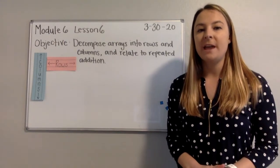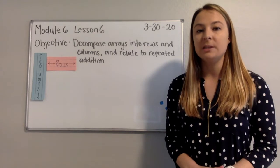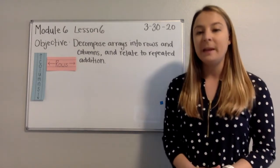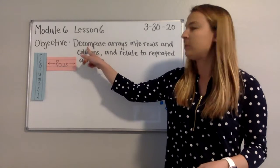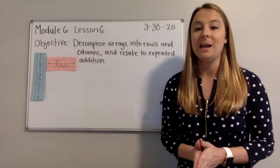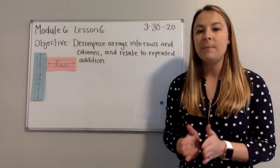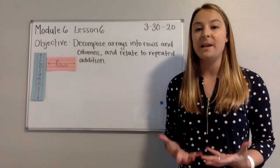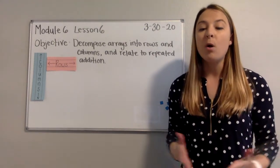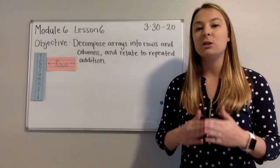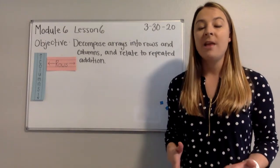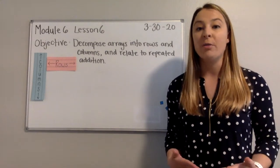Our objective for today is to decompose arrays into rows and columns and relate to repeated addition. I want to talk about this word decompose for just a second. When we decompose something, we're going to take it apart and break it down into smaller pieces. Instead of looking at the whole array, we're going to break it down into the rows or the columns that are in the array to figure out the total.